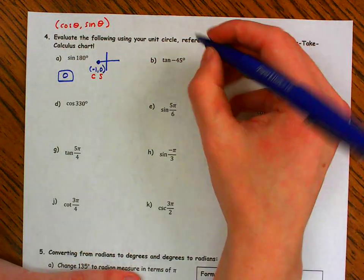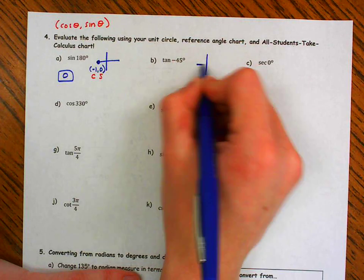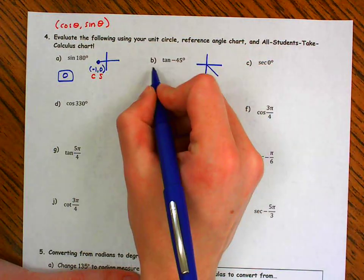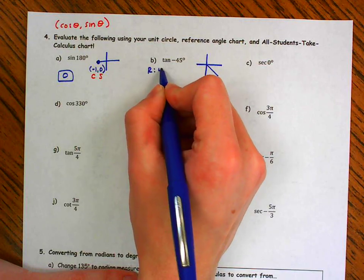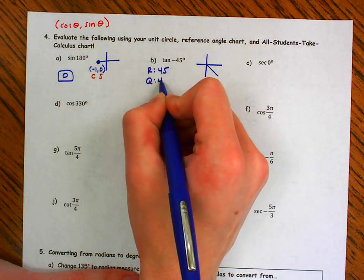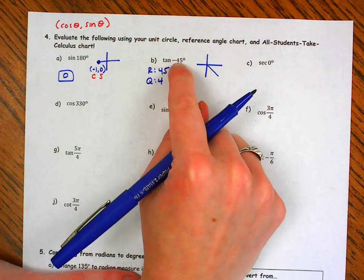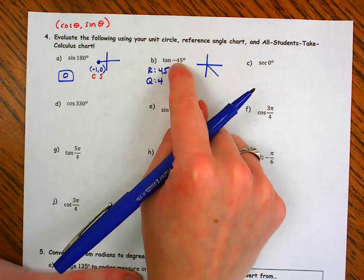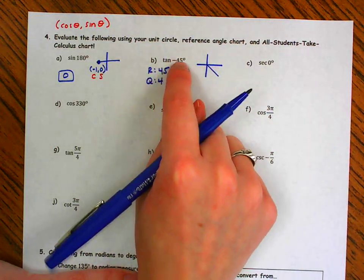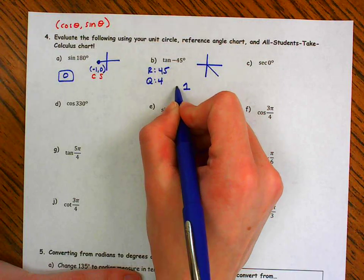Let's look at part B: negative 45 degrees. Negative 45 would be here — if I'm going down, I'm going to be here. My reference angle is 45, my quadrant is quadrant 4. If I want tangent of 45, this is in my reference angle chart — it's the same as pi over 4. Tangent of 45 is 1, but tangent in the fourth quadrant is negative.